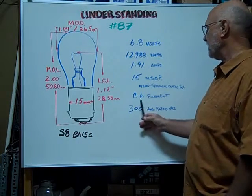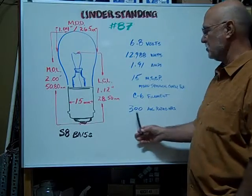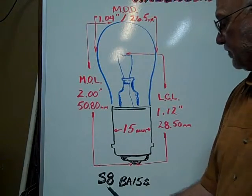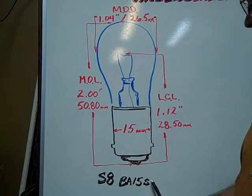The filament type is a C-6, average rated hours are 300 hours. The S8 BA-15S.